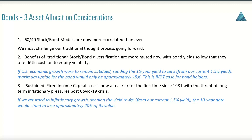The benefits of traditional stock-bond diversification are more muted now than ever because bond yields are so low that they provide very little cushion to equity volatility. I ran some quick math on my HP-12C looking at the 10-year specifically. If U.S. economic growth were to remain subdued, sending the 10-year yield to zero — a worst-case scenario since the Federal Reserve has said they're not interested in supporting negative rates — the maximum upside for a 10-year treasury would be roughly 15%, assuming a 1.5% yield now with $1,000 par interest payable twice a year.